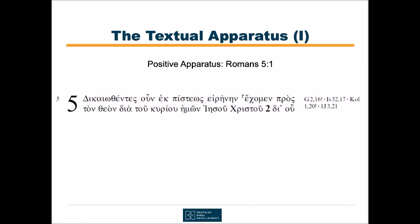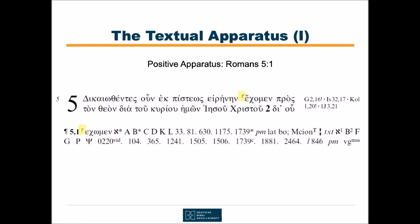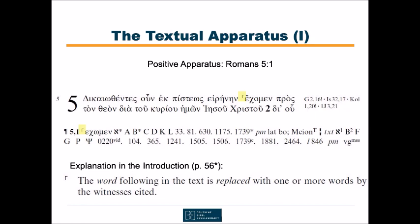What do we read in the text? Therefore, since we are justified by faith, we have peace with God through our Lord Jesus Christ. But what does that sign mean — this little hook — which we see in the Greek text as well as in the apparatus? In the introduction, these signs are explained. There is no way around it; you need to make yourself familiar with them. They are not many. On page 56, we read about this one.